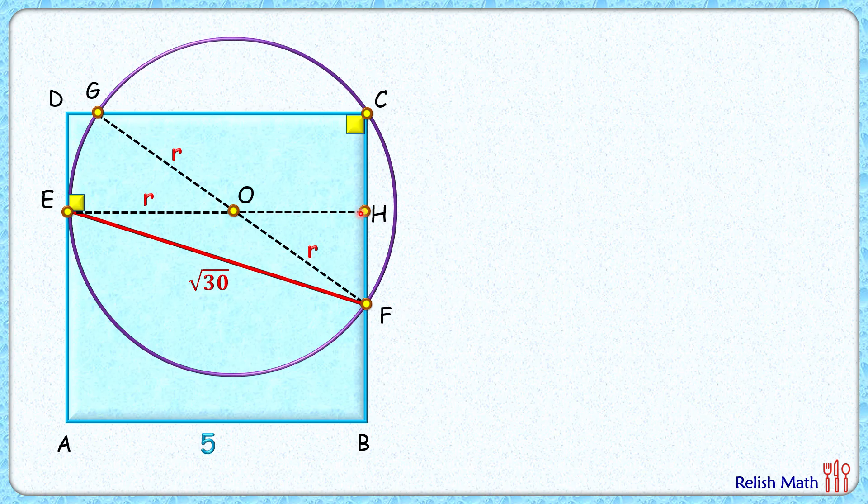And EH is a transversal. Angle E and angle H are alternate interior angles and thus 90 degrees. Now let's assume HF is x. And if you see, EH length is the same as AB length, or 5 centimeters. Thus OH length will be 5 minus r.